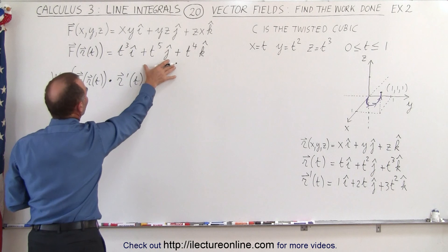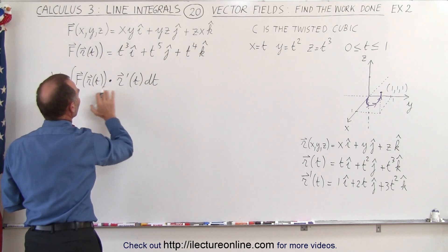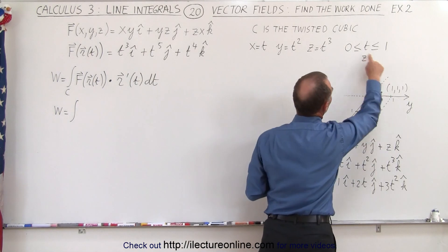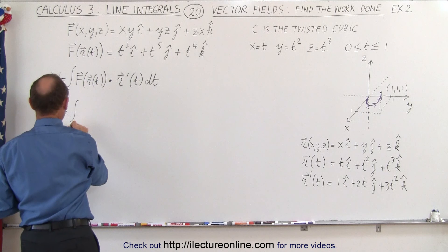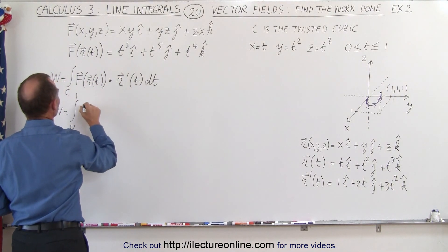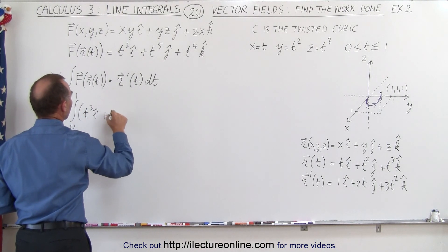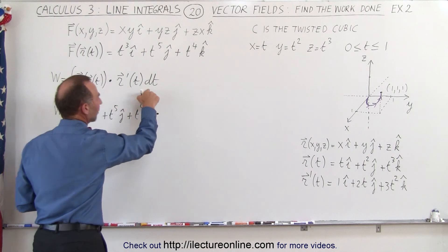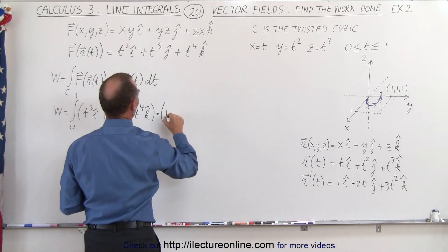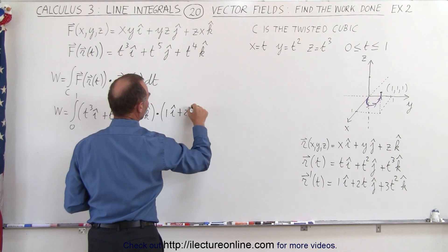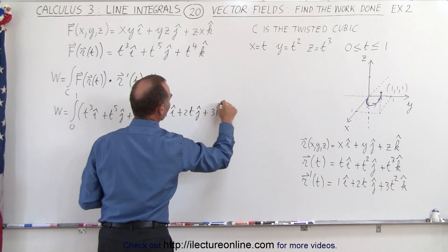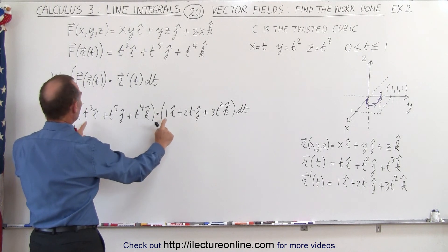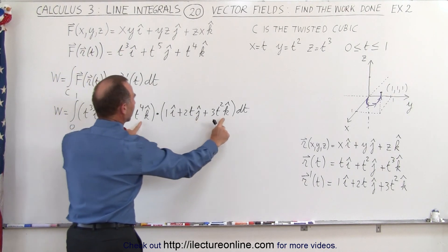Now we use those parameterized expressions in our integral. The work done equals the integral from 0 to 1 of the force field — t cubed in the i direction plus t to the fifth in the j direction plus t to the fourth in the k direction — dotted with the derivative of the position vector: 1 in the i direction plus 2t in the j direction plus 3t squared in the k direction, times dt. Taking the dot product, we multiply the i components, j components, and k components together, and it becomes a scalar.